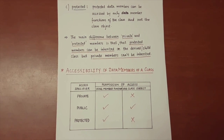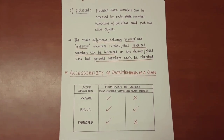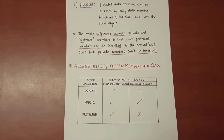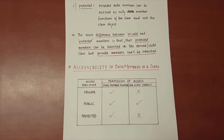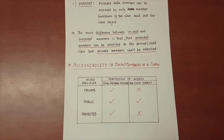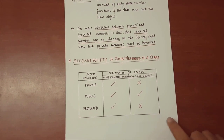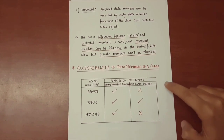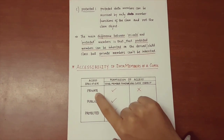You may wonder about the difference between private and protected, since they appear to have the same definition. The main difference is that private data members cannot be inherited in a child or derived class, but protected members can be inherited. In this table, the accessibility of data members is shown: private members are accessible via member functions but not class objects; public members are accessible via both; and protected members are accessible via member functions but not class objects.